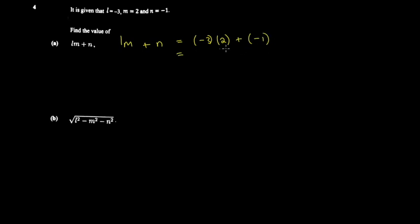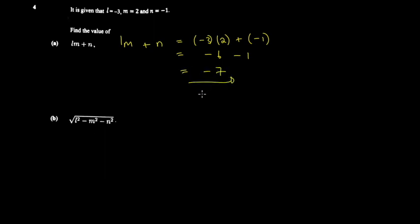Using brackets helps me not get the signs mixed up. So here, negative three times two — you do multiplication first, following order of operations — and you get negative six. Then on this part you get minus one, giving you negative seven. That's just about it for that one.